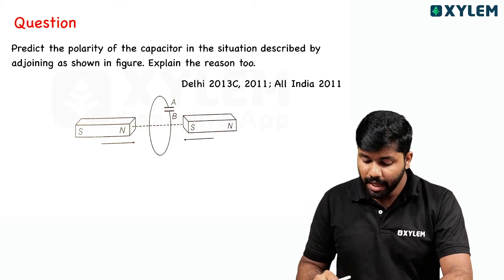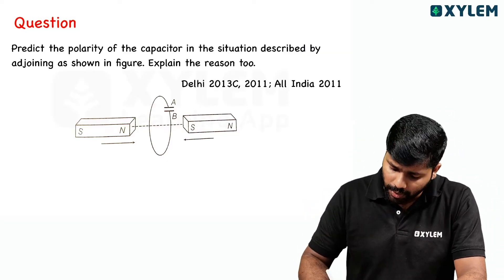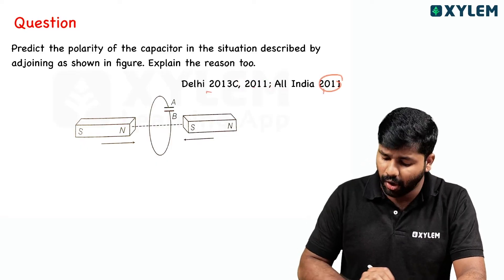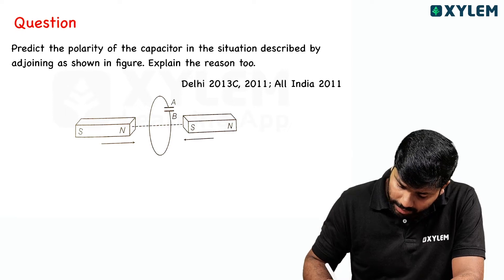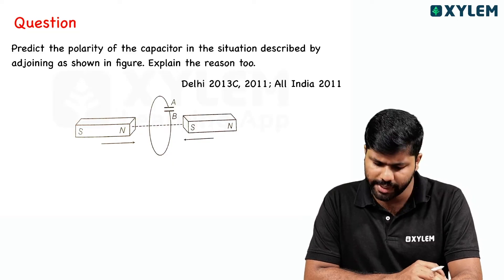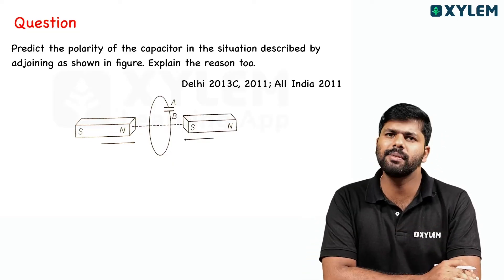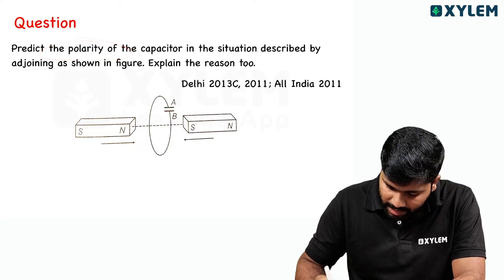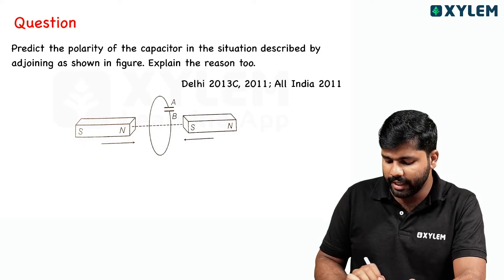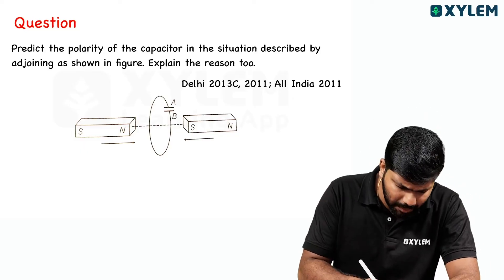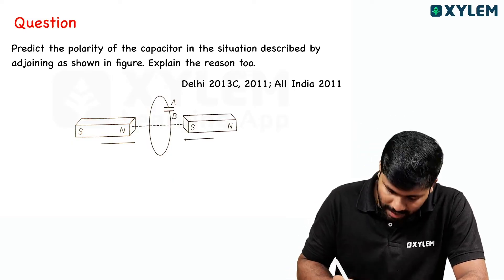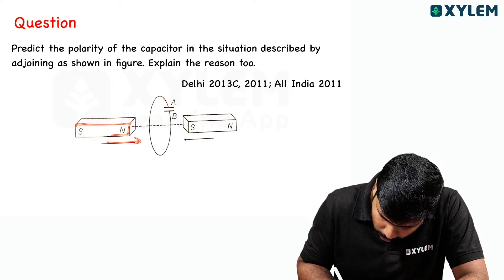Next question — this question is from CBC, Delhi 2013 and 2011, All India. Predict the polarity of the capacitor in the situation described by the adjoining figure. This is the capacitor. Explain the reason. Here, this is our magnet, and this magnet is moving towards the coil.